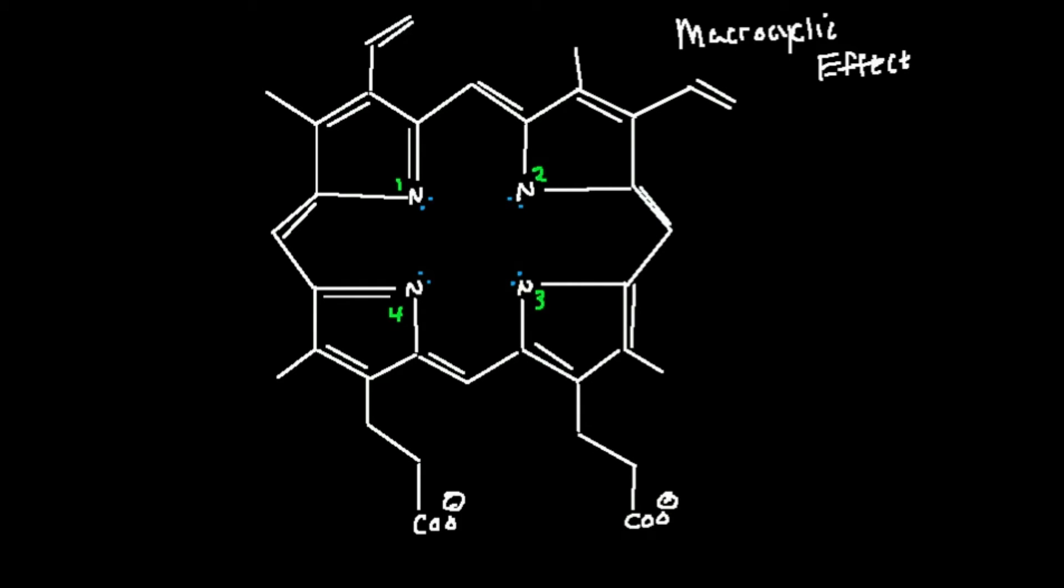What is the macrocyclic effect? The macrocyclic effect is essentially the same thing as the chelate effect except for the fact that the multidentate ligand, and they're usually tetradentate, the donor atoms are all in a very rigid or semi-rigid structure. They're part of usually a very large rigid structure.